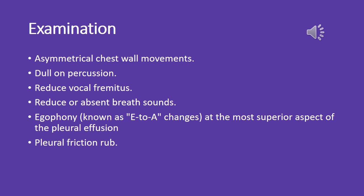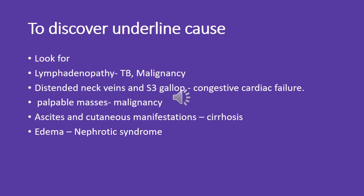At the most superior aspect of the pleural effusion, a pleural friction rub may be heard. To determine the underlying cause, look for lymphadenopathy, which may indicate tuberculosis or malignancy. Check for distended neck veins and an S3 gallop, suggestive of congestive cardiac failure. Palpable masses may indicate malignancy. Ascites and cutaneous manifestations are common in cirrhosis. Edema is often associated with nephrotic syndrome.